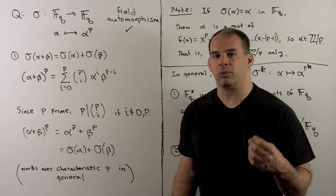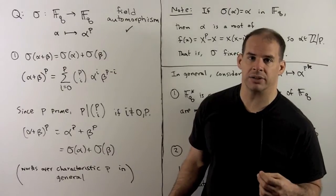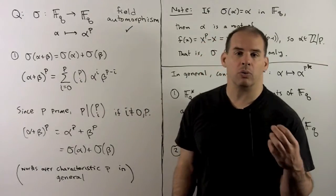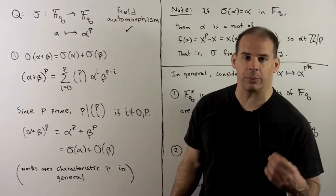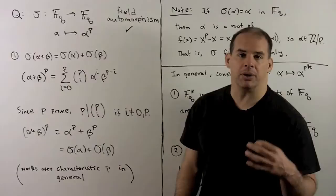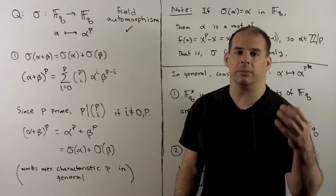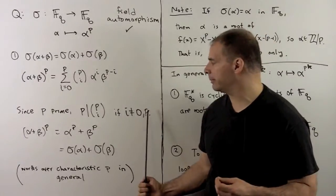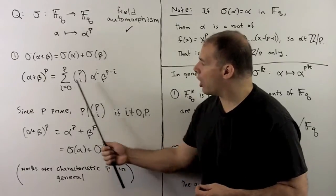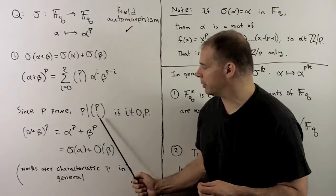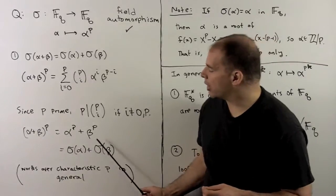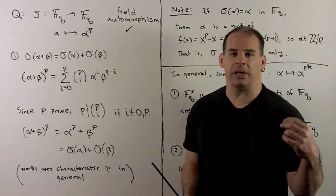Now, we might hope that raising to the pth power gives a field automorphism. In this case, it does. So suppose sigma carries F_q to F_q by raising to the pth power. The ring homomorphism properties are all clear except for the additive property. For this, we invoke the binomial theorem. Now, because p is a prime, p divides the binomial coefficient p choose i, except when i is 0 or p. In that case, coefficient's equal to 1. Because we have characteristic p, all the inside terms drop out, and I'm left with alpha to the p plus beta to the p. That's our homomorphism property. Note, this argument works for general characteristic p. We don't need to be in a finite field.